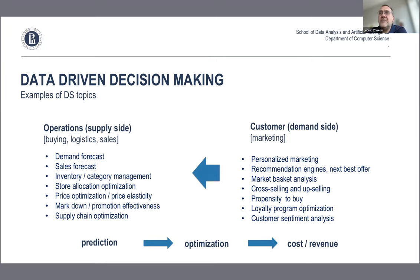On the customer demand side, we're talking about marketing and sales. Interesting problems include personalized marketing — when, what, and how to deliver the message — recommendation engines, next best offer, market basket analysis, cross-sell and upsell, propensity to buy (the probability of somebody buying items), loyalty program construction and optimization, and sentiment analysis of customer reviews and responses.